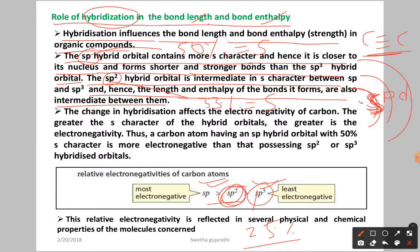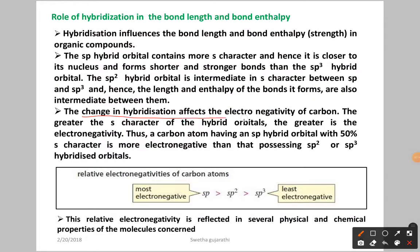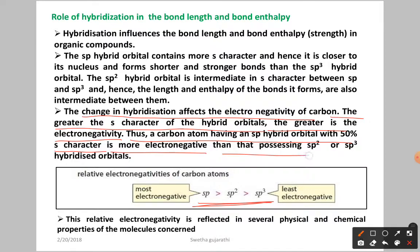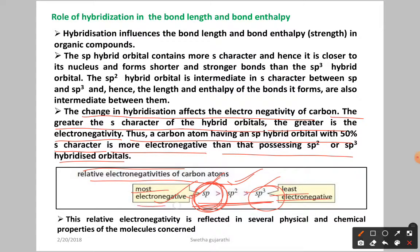The change in hybridization affects the electronegativity of carbon. Once the hybridization changes, electronegativity is going to change. The greater the S character of the hybrid orbitals, the greater is the electronegativity. A carbon atom with SP hybrid orbitals with 50% S character is more electronegative than one with SP2 or SP3 hybrid orbitals. Among them, SP3 has the least electronegativity and SP has the most electronegativity.